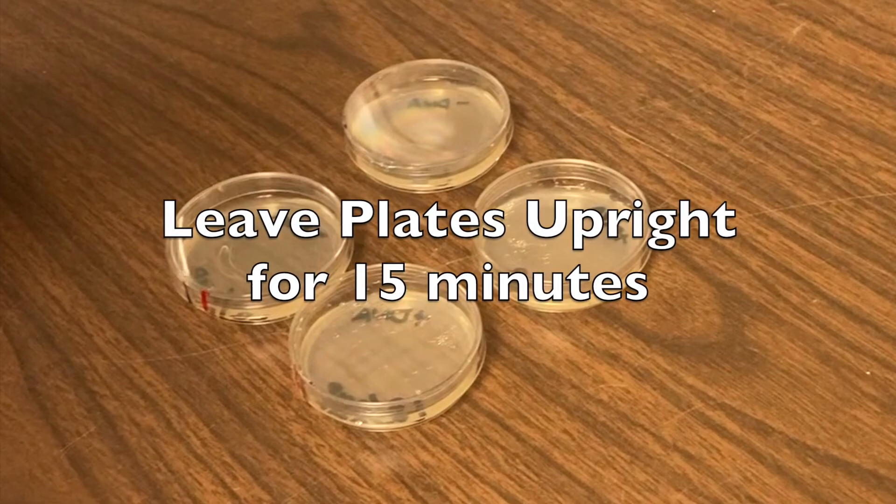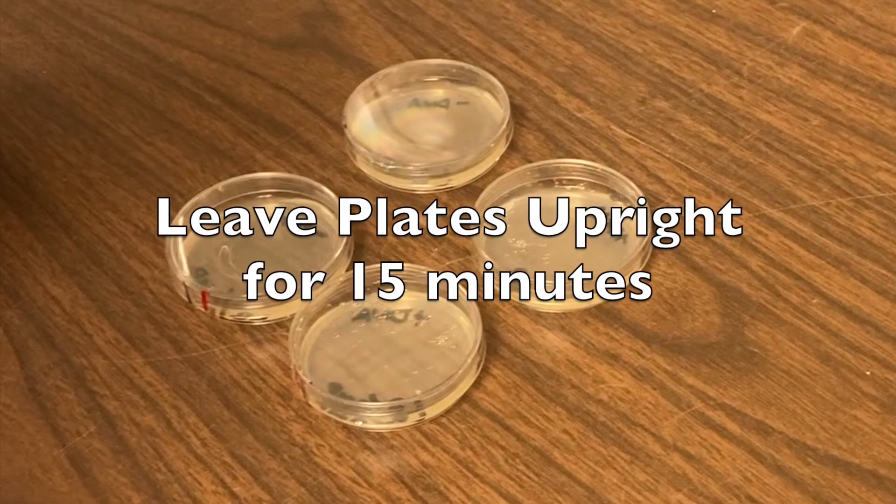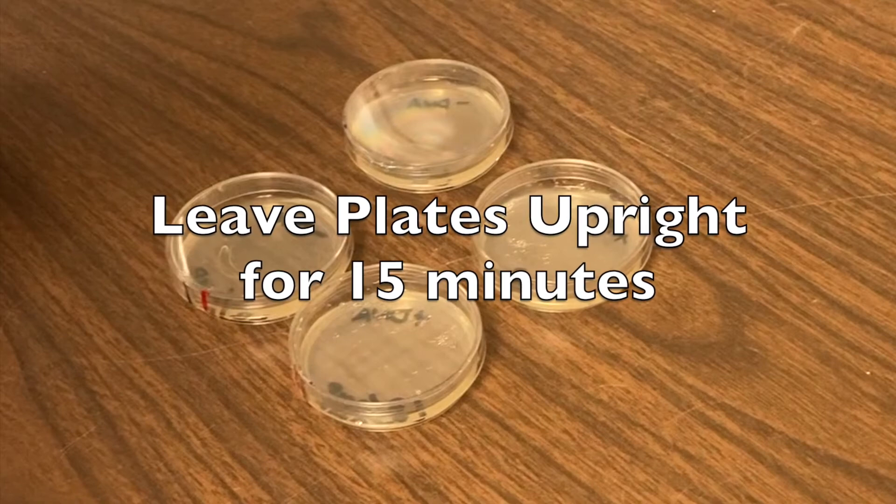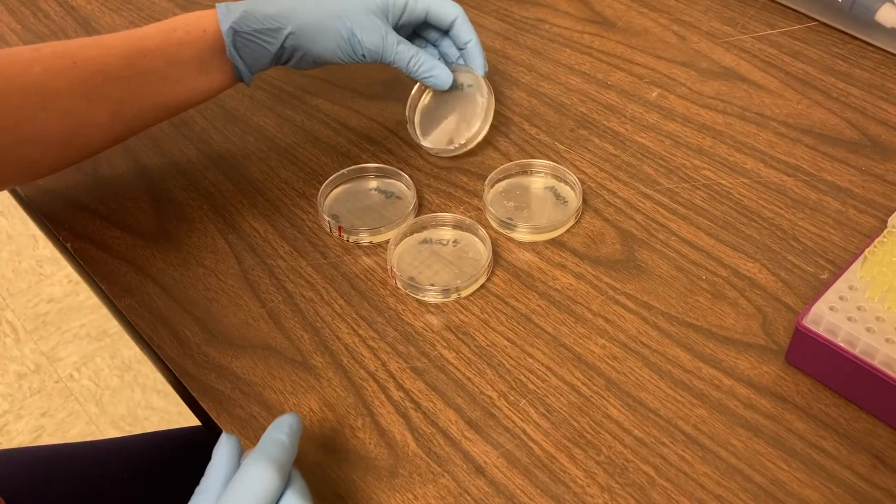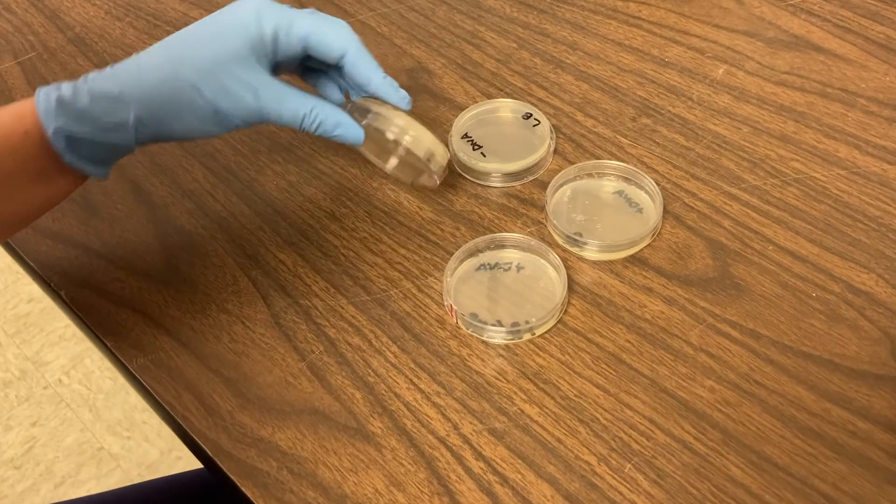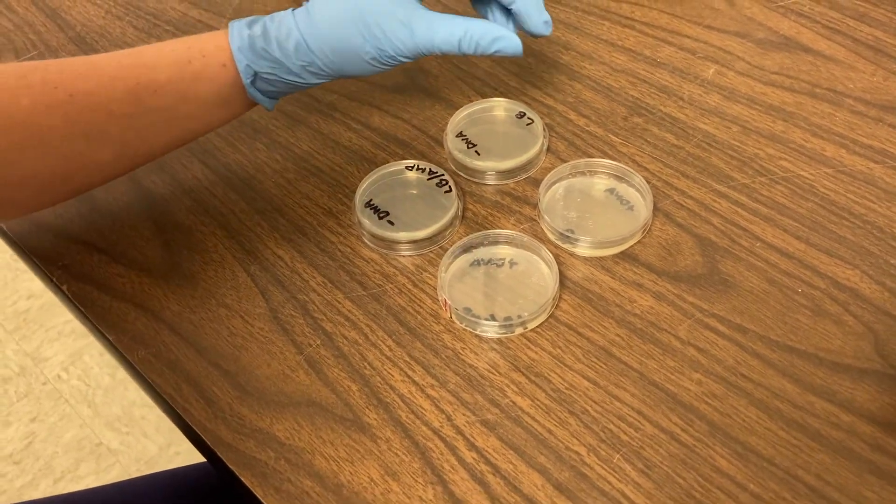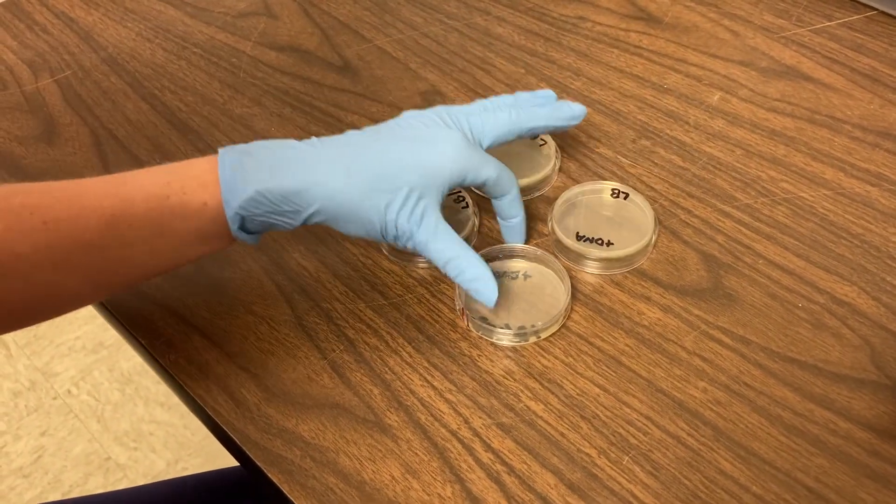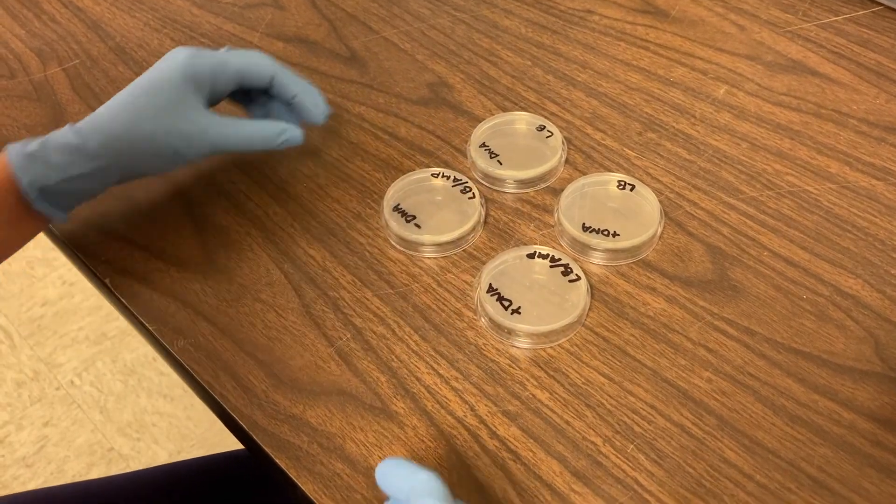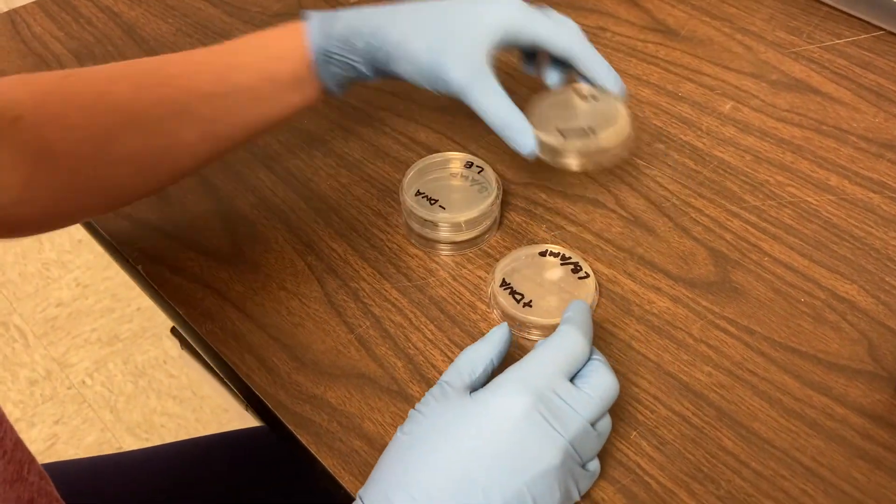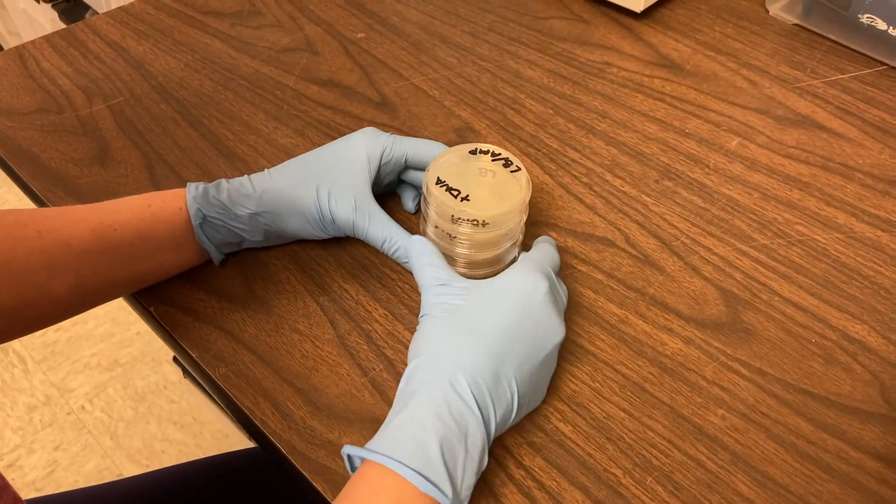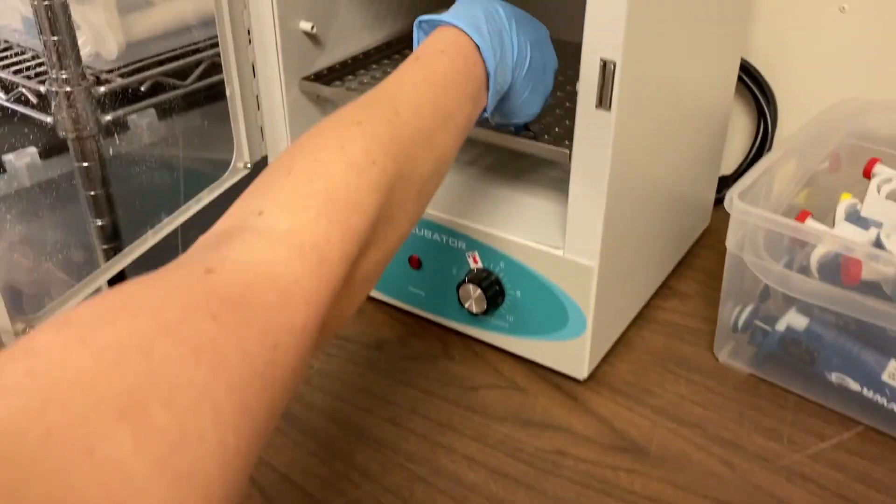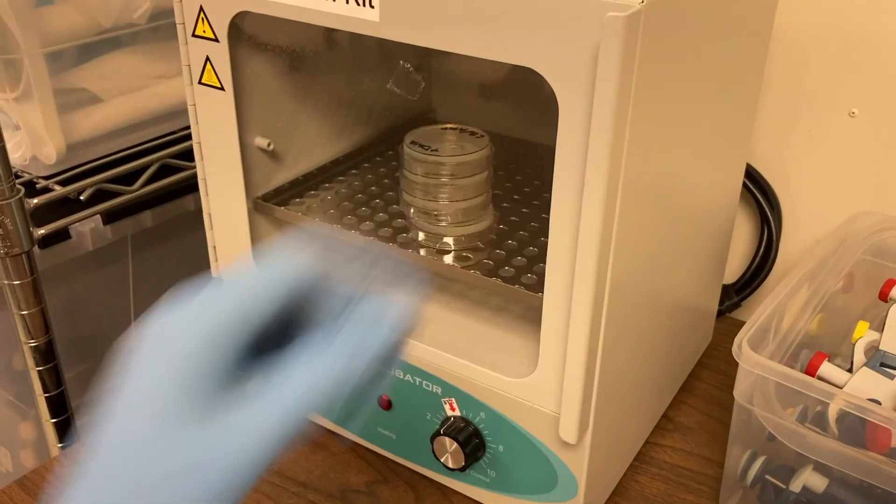So we've successfully plated our bacteria. And we're going to leave them upright for 15 minutes. This allows them time to soak into the agar. Next, we'll turn the plates over and put them into a 37 degrees Celsius incubator. We're going to leave them there overnight. When we come back, we'll be able to look at the results from our bacterial transformation.